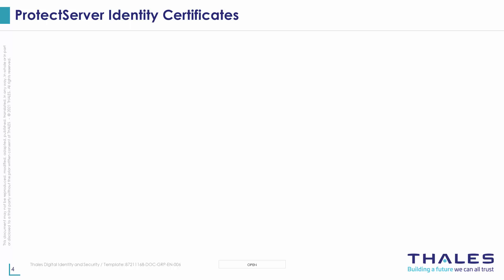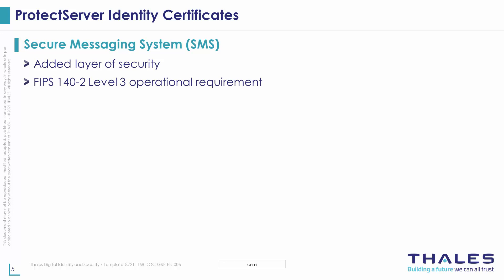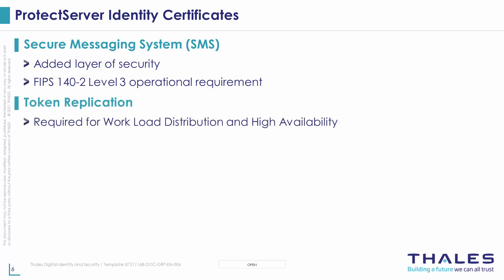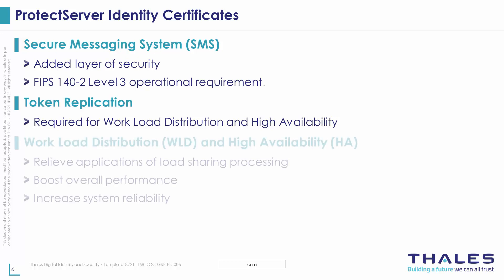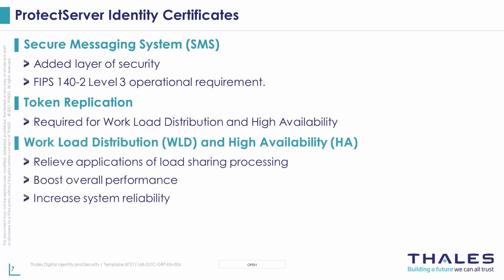Protect Server 3 HSMs require PICs to communicate with the PTK client through the secure messaging system, an optional trusted channel of communication that is mandatory for use in FIPS mode. User tokens can be replicated across multiple HSMs in a deployment only if the HSMs trust one another through the exchange of PICs. Token replication is also necessary in any system operating under a workload distribution or high availability scheme to boost system performance and reliability. All of these features can only be used if every HSM in your deployment has a PIC.